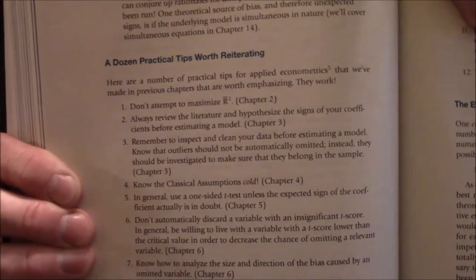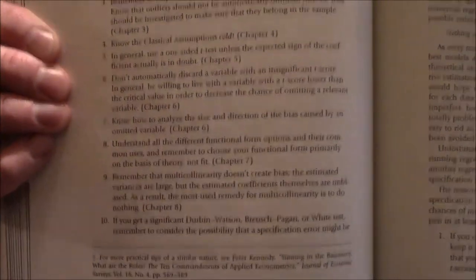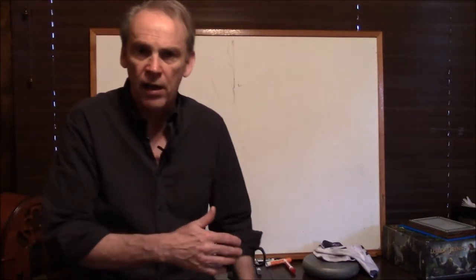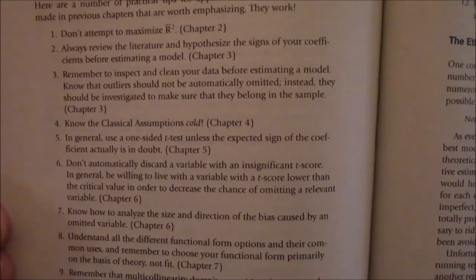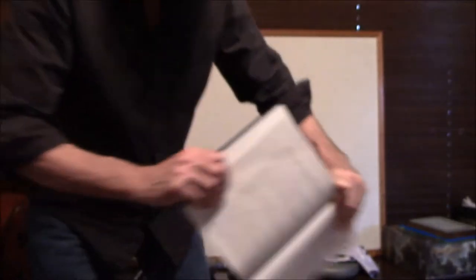After that he has practical advice for your project on page 348 — what to check if you get an unexpected sign, which we talked about in the omitted variable bias section, and a dozen practical tips on page 350. Don't try to maximize adjusted R-squared. Always review the literature and hypothesize signs before estimating a model, and so on. If you're doing a regression project, start with Chapter 11 and he'll reference you back to the relevant chapters.